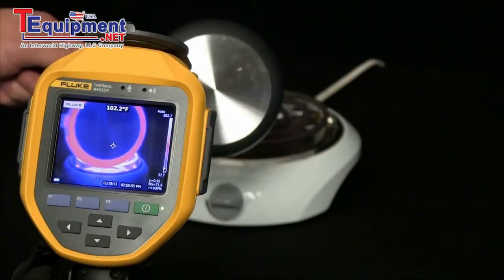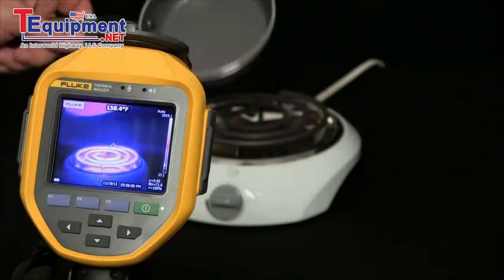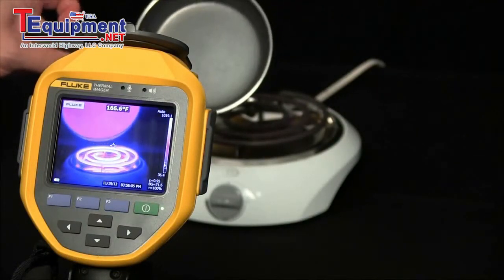The difference here is the emissivity value is much lower on the shiny metal surface than it is on the more highly emissive surface of the inside of the pan.